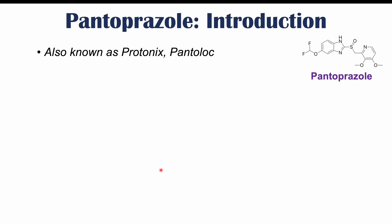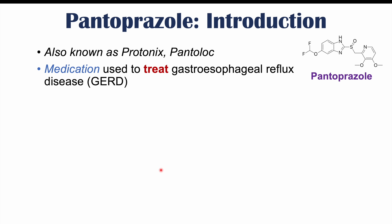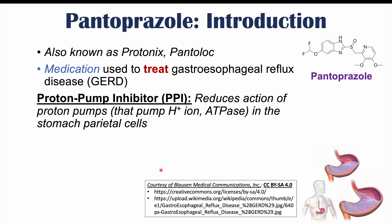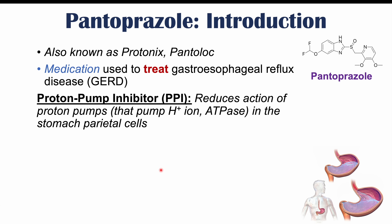Pantoprazole is a medication used to treat gastroesophageal reflux disease, or GERD, so it's used to treat symptoms of acid reflux. It is a proton pump inhibitor, or PPI, which is a medication that reduces the action of proton pumps. Proton pumps occur on certain cells in the stomach called parietal cells, and these cells pump out H+ ions, which are protons. These are what acidify the stomach, and PPIs like pantoprazole inhibit those proton pumps so the stomach doesn't become as acidified, which is why it treats symptoms of GERD.